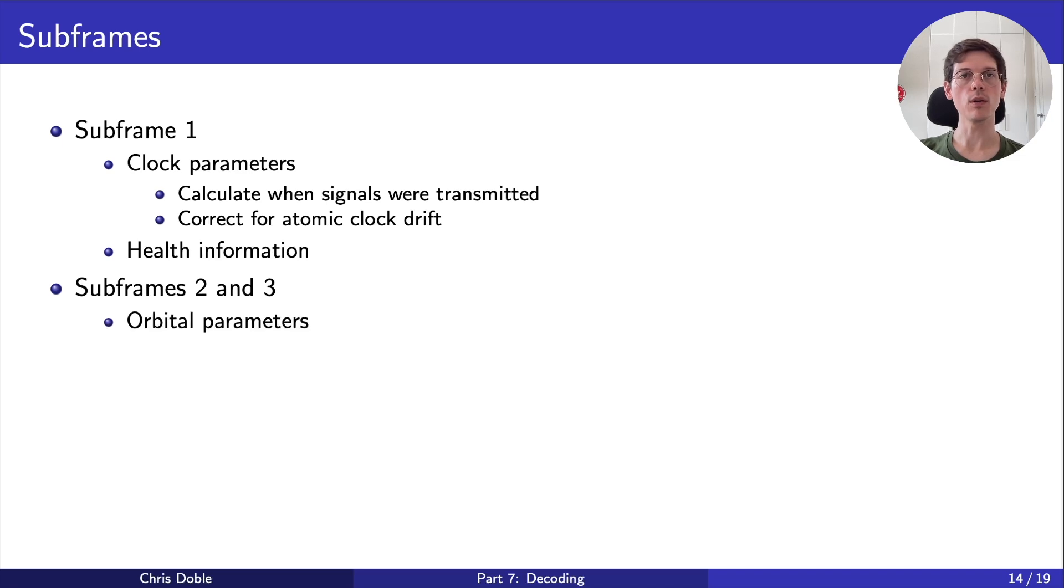Subframes 2 and 3 contain orbital parameters. These are used to calculate the satellite's position at a particular point in time. This is what tells us where the satellite was when it transmitted a signal.